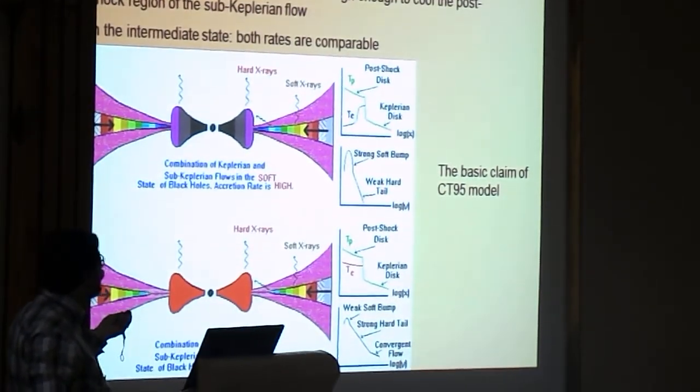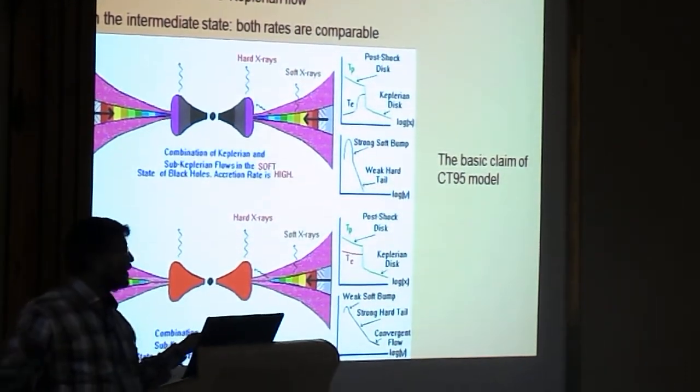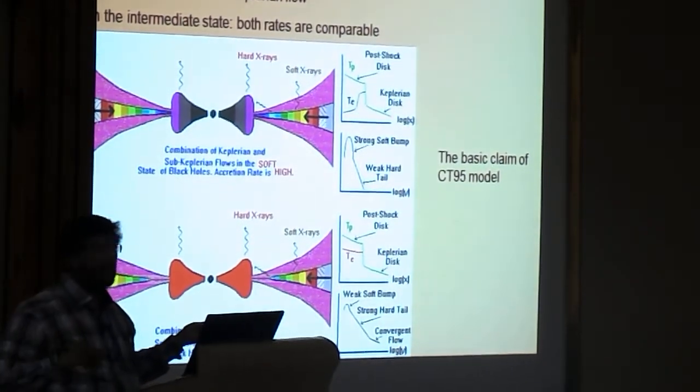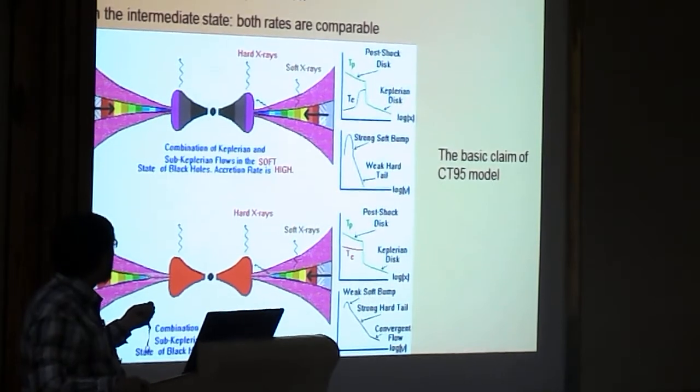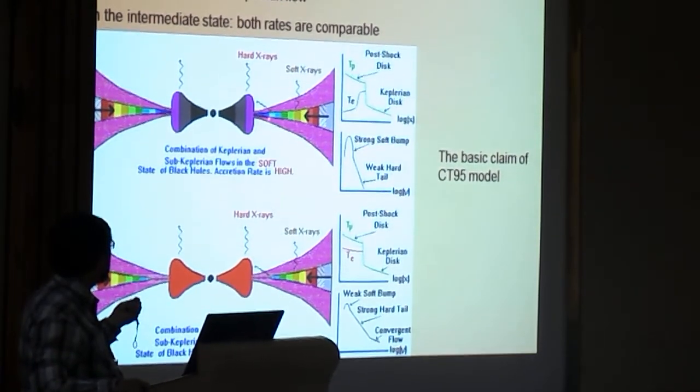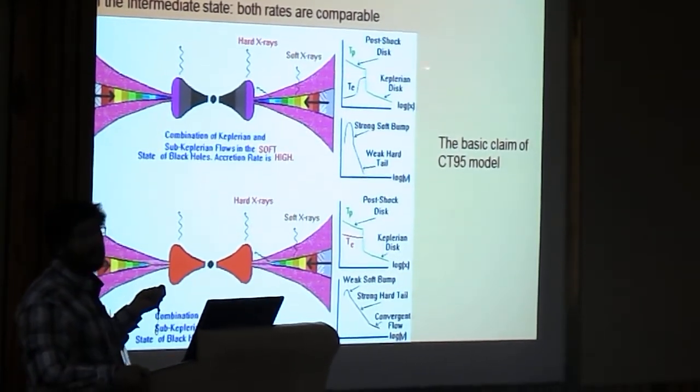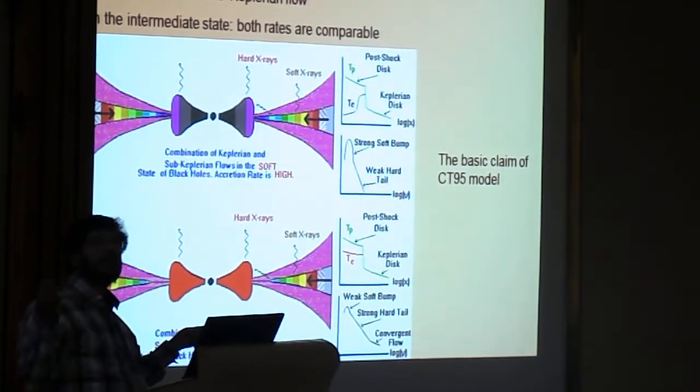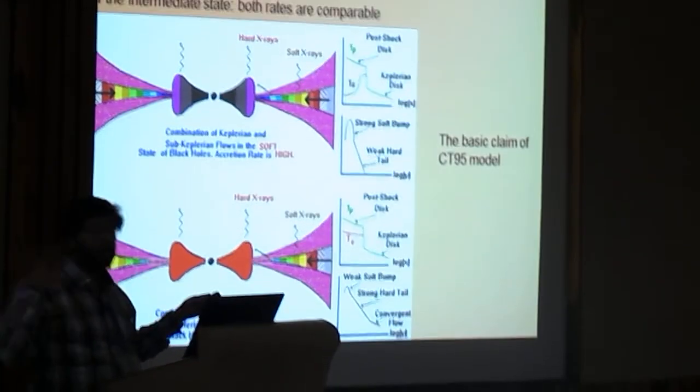It's not an ad hoc model diagram. So you have a disk whose region where viscosity is larger than the critical viscosity will produce a Keplerian disk, viscosity is less than the critical viscosity will remain sub-Keplerian and that region will produce centrifugal pressure dominated boundary layer or shock.